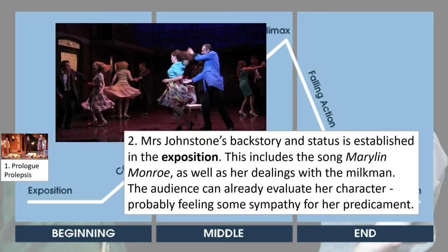Secondly, we get what we might call an exposition. In Blood Brothers, the exposition is Mrs. Johnson's backstory, explaining her status and position. We get this through the song 'Marilyn Monroe' and her dealings with the milkman, and we can already begin to feel some sympathy for the situation she finds herself in. The exposition stage is the establishing stage — the stage where key details are laid down. In Romeo and Juliet, for example, the exposition establishes the feud between the two families; in Macbeth, it is the background of Macbeth's glories in battle.